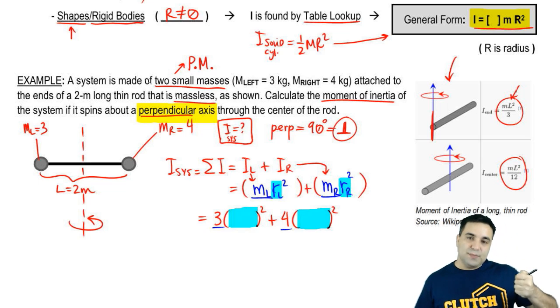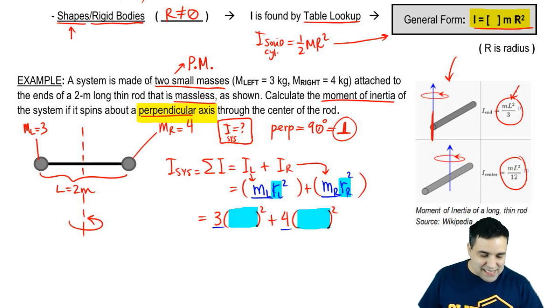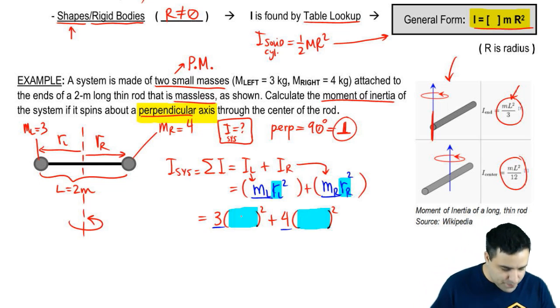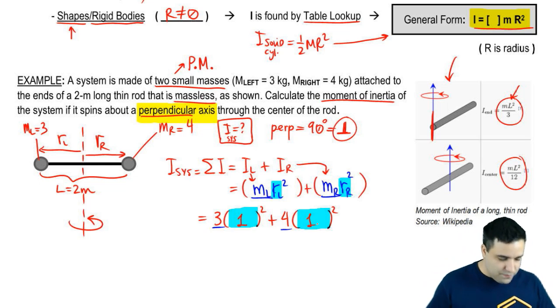R is the distance between the object and its axis of rotation. So it's not the two. R is this. So this is R for the right ball or right object. And this is R for the left object. The distances are one for both, because it sits right down the middle. So it's going to be one and one.